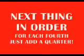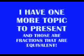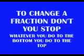First you need to simplify fractions — that's what's on top divided by the bottom. Next thing is ordering fractions: for each of them, find a common denominator. One third is 1.33, one half is 1.5. I have one more topic to present — equivalent fractions. They're equal, so you cross multiply. Whatever you do to the bottom, send it to the top.